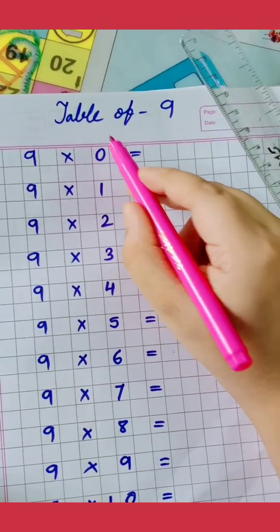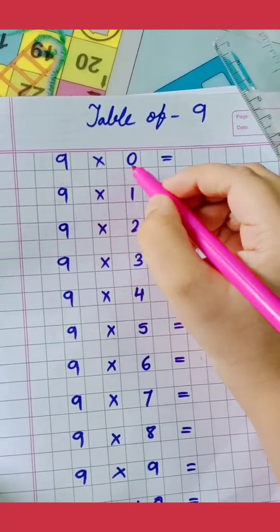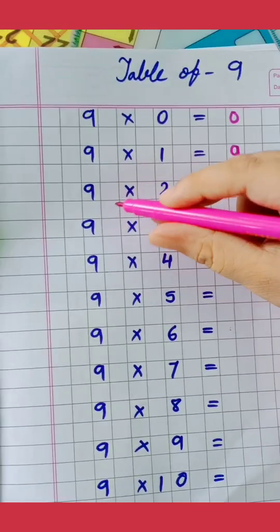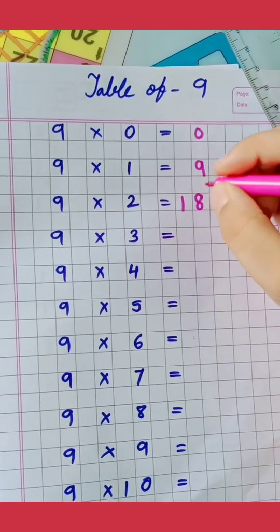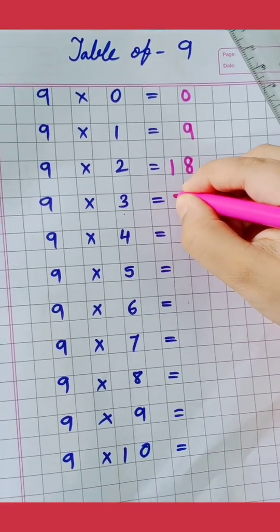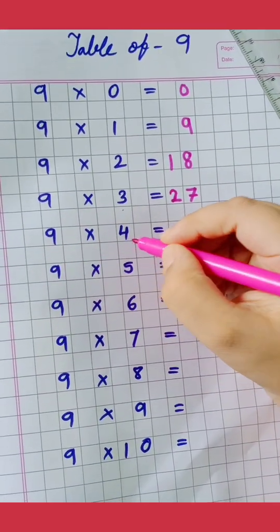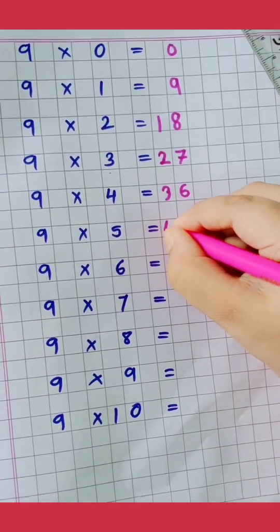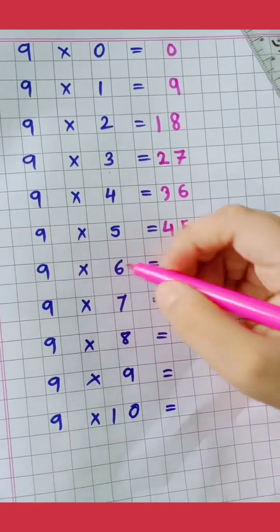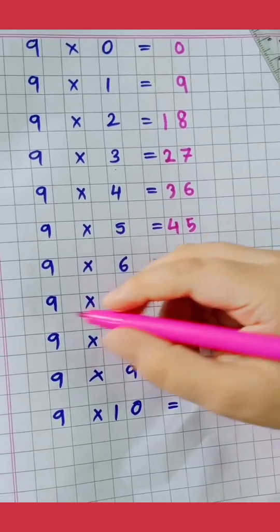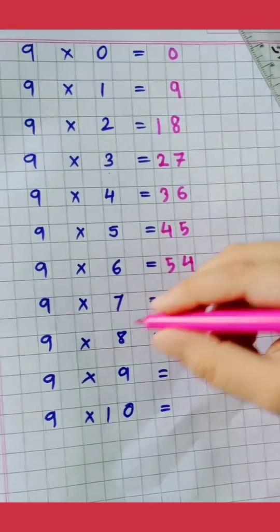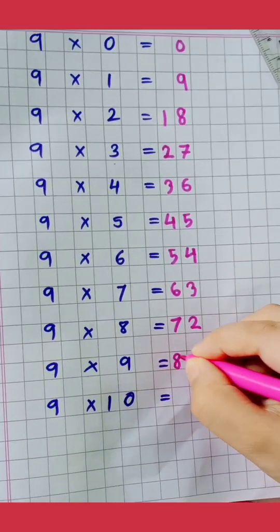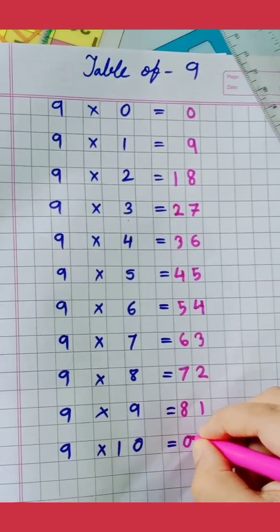Table of 9. 9 0's are 0, 9 1's are 9, 9 2's are 18, 9 3's are 27, 9 4's are 36, 9 5's are 45, 9 6's are 54, 9 7's are 63, 9 8's are 72, 9 9's are 81, 9 10's are 90.